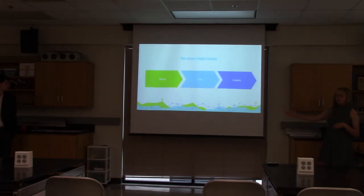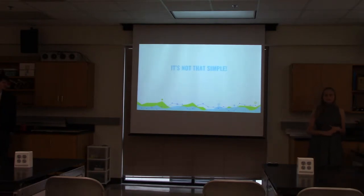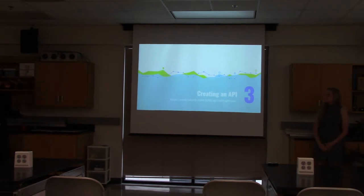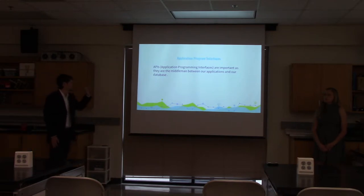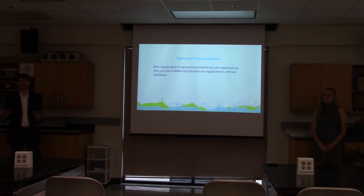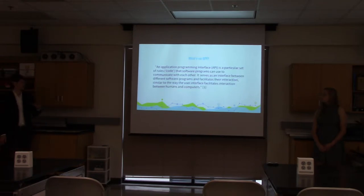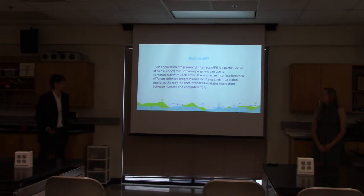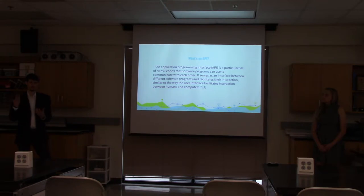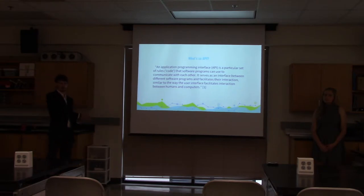So obviously design, code, publish all seems easy, right? But it really isn't that simple. We want to talk about the steps we had to take to actually create each part of our application, starting with the API. An API is the middleman between the application and the database — it handles all the transactions between the two. It's called an application programming interface: a particular set of rules or code that a software program can use to communicate with another software program, in this case a database. It serves as an interface between our application and our database, the same way a user interface is a middleman between the user and an application.